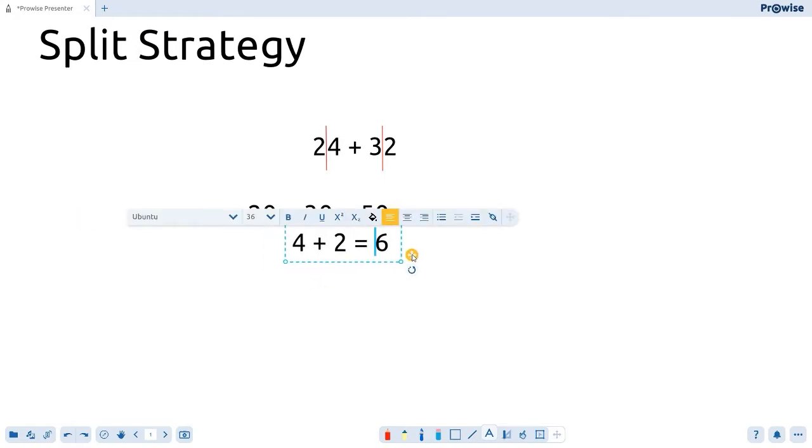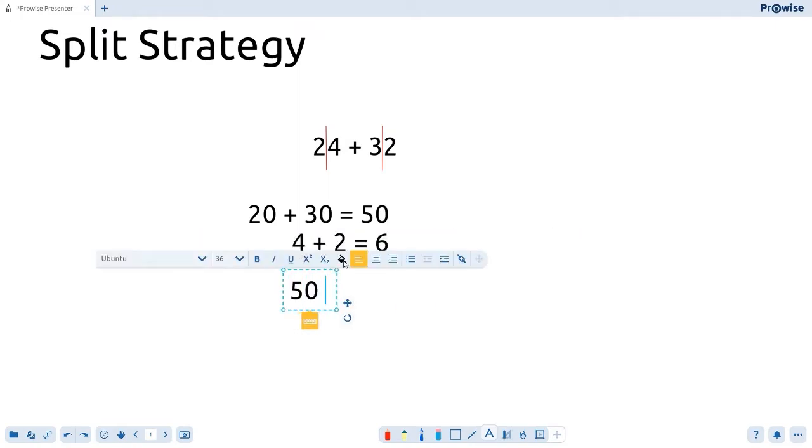Now we're not quite done with the split strategy. A great way to do it is to line them up nice and evenly wherever you're doing your working out and add the two numbers together. So we've got 50 plus 6. If I make another number sentence down here, 50 plus 6 equals 56.